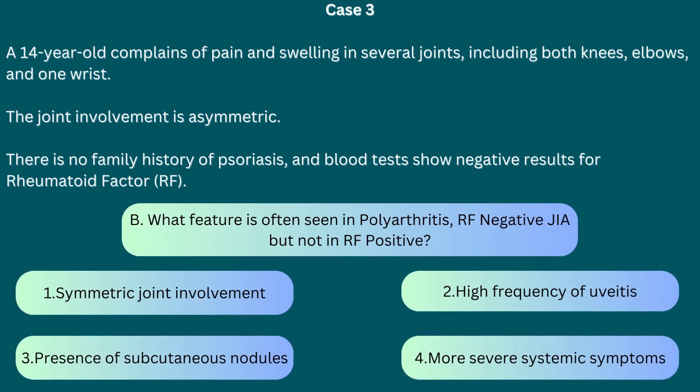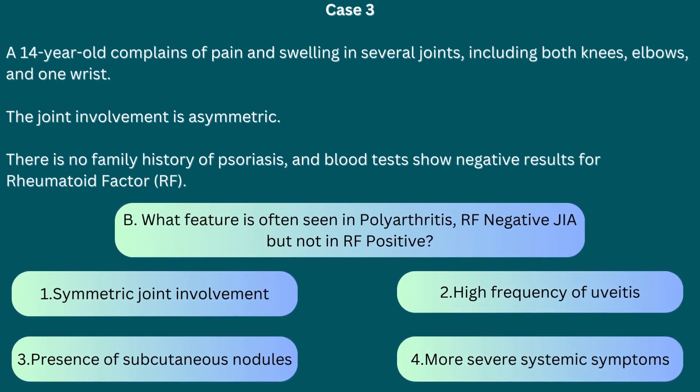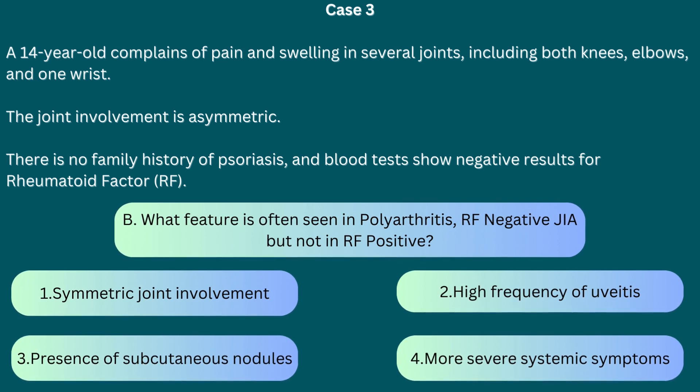Question B: What feature is often seen in polyarthritis rheumatoid factor negative JIA but not in rheumatoid factor positive? 1. Symmetric joint involvement, 2. High frequency of uveitis, 3. Presence of subcutaneous nodules, 4. More severe systemic symptoms. The correct answer is 2. Uveitis, or inflammation of the eye, is more commonly associated with RF-negative JIA compared to RF-positive. This complication requires careful monitoring as it can lead to vision problems if untreated.